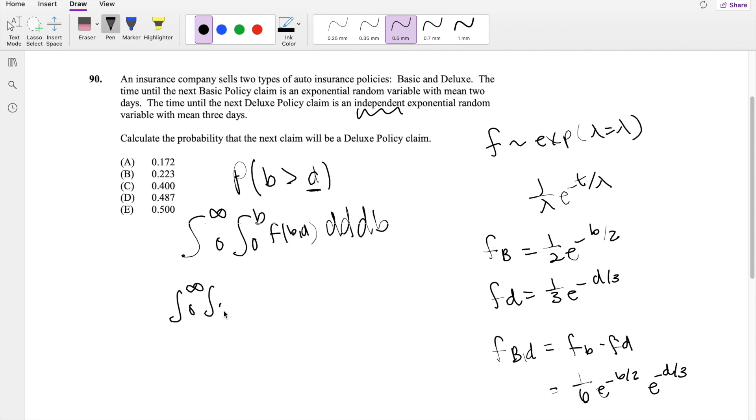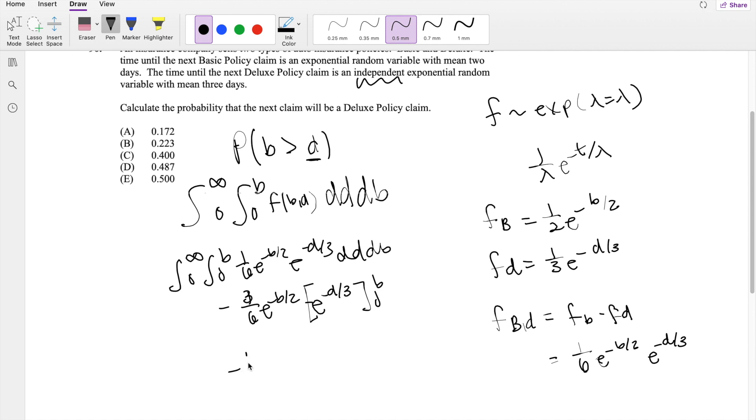So this is equal to 0 to infinity, 0 to b of 1/6 e to the negative b over 2, e to the negative d over 3, dd, db. If we integrate with respect to d, the 1 over 6 e to the negative b over 2 is just a constant, so you get negative negative 3 integrating e to the negative d over 3 from 0 to b, so you get negative 1/2 e to the negative b over 2. Plugging in the upper limit here, you get e to the negative b over 3 minus, plugging in the lower limit, you just get 1.